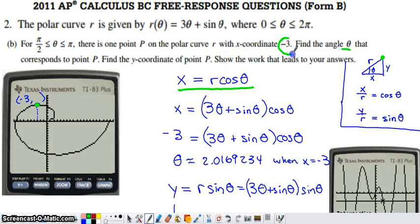The issue is that x = r cos θ depends on three variables. We want x to be -3, but we still have r and θ. We need this to depend on only one variable. Since the point is on the curve r = 3θ + sin θ, I replaced r with that expression. Then I put -3 in place of x. This is a calculator question, so I solved using the calculator.